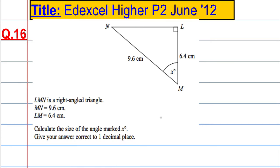Okay, question 16. LMN is a right angle triangle. MN is 9.6 and LM is 6.4.